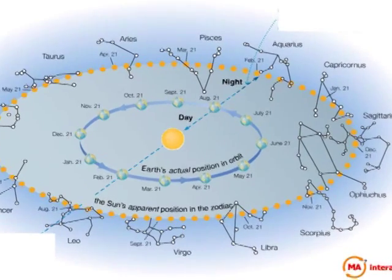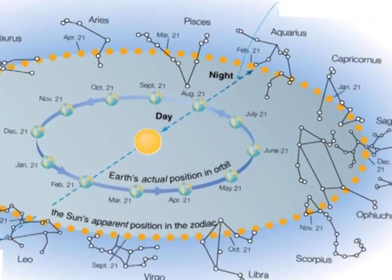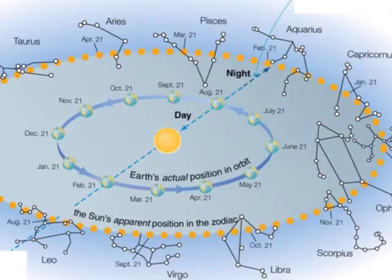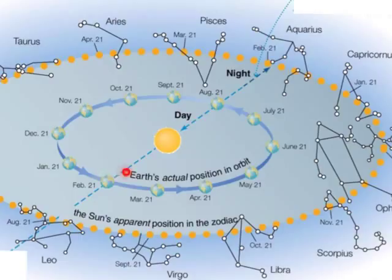If you look closely — I'm going to zoom in so we can see a particular part of this — you'll notice that these are the constellations of the zodiac. We have Aquarius, Pisces, Aries, Taurus, and these dots back here are where the sun appears to be relative to the Earth.